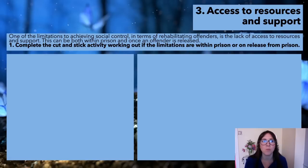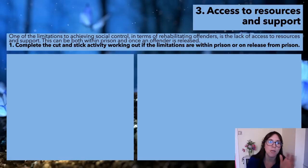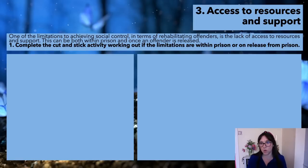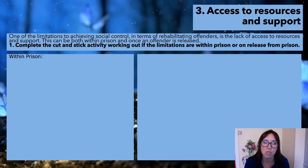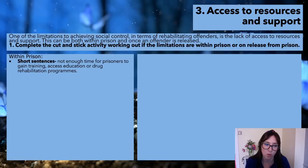Access to resources and support. One of the limitations to achieving social control in terms of rehabilitating offenders is the lack of access to resources and support — both within prison and once an offender is released. Within prison, the limitations include: short sentences — there is not enough time with sentences of less than 12 months to train, access education, or complete drug rehabilitation programmes. Basically, you can't do anything with anyone on a short sentence.